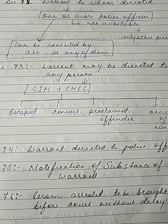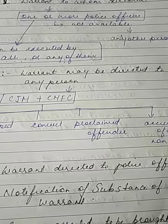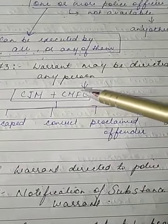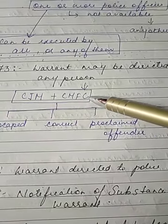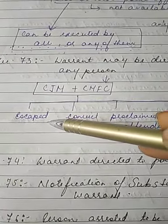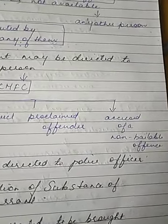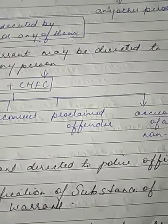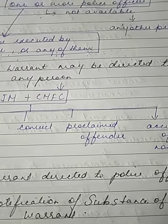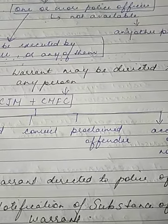Section 73 says the warrant may be directed to any person. The Chief Judicial Magistrate or Judicial Magistrate of the 1st Class can direct a warrant to any person within their local jurisdiction against a person who is an escaped convict, a proclaimed offender, or an accused in a non-bailable offence. A receipt must be written stating the subject matter and the charges against that person.